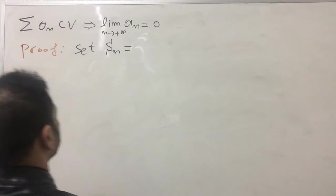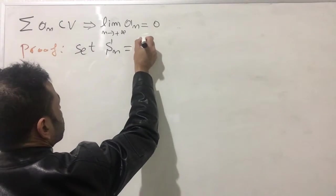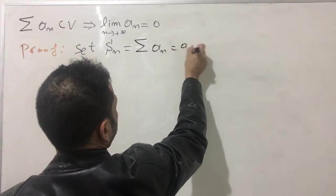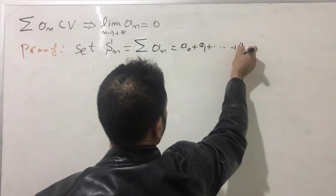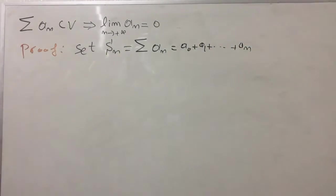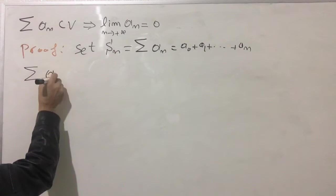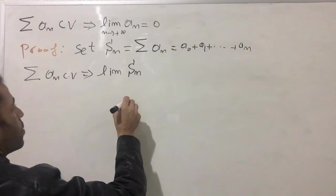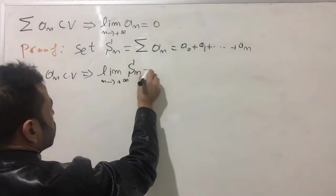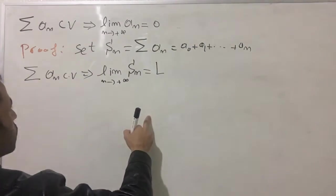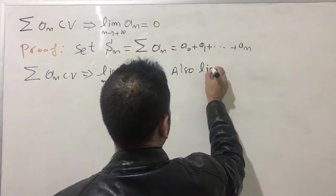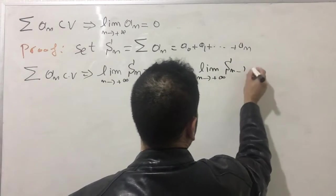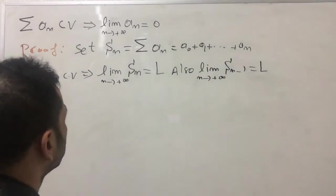Let's set S_n as the partial sum of a_n, which is a_0 plus a_1 and all the way down to a_n. Since this is a convergence series, it implies the limit of S_n as n goes to infinity equals L. Also, the limit of S_{n-1} as n goes to infinity equals the same limit L.